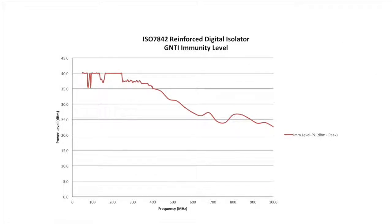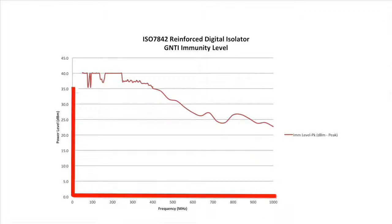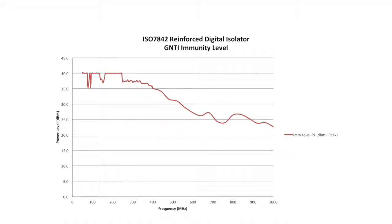Now let's look at some test results. The output of the test is a series of data points with corresponding frequency and power level. The power level can be converted to a corresponding voltage level since the setup has a known 50 ohm termination across the isolation barrier to prevent reflections. The amplitude represents the highest power level where the part did not exhibit a fault, or the setup reached the maximum power level without a failure. If you take all of these data points and graph them, it will show you the device's immunity versus frequency. As you can see, the new ISO 7842 family of TI reinforced digital isolators are immune to high power levels across the isolation barrier across a wide range of frequencies.